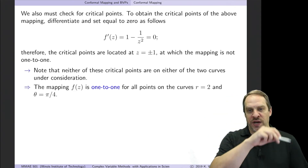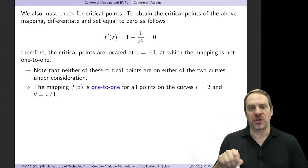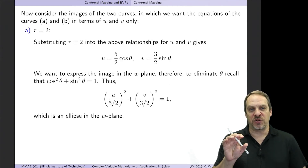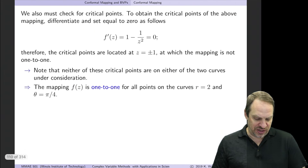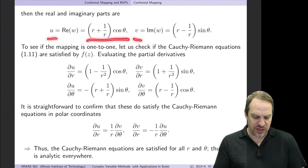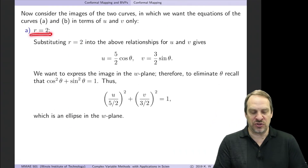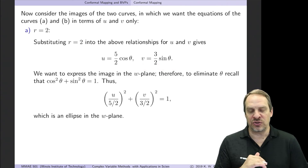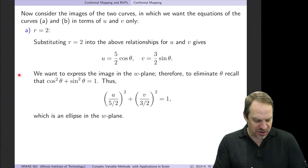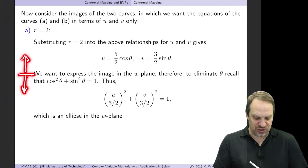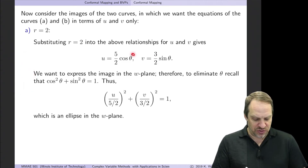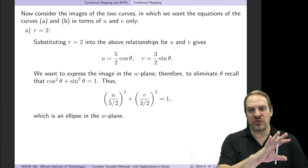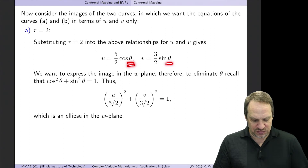The critical points z = ±1 are not on our circle r = 2, nor on the line θ = π/4, so the mapping is one-to-one for every point on these two curves. Now let's actually map the curves. Going back to the expressions for u and v, substituting r = 2 gives u = (5/2)cosθ and v = (3/2)sinθ. Up to this point it's plug-and-chug, but from here it is problem-specific: we want to eliminate θ, since it is a variable from the z-plane.